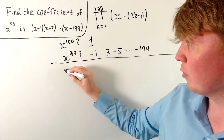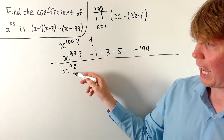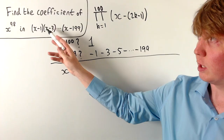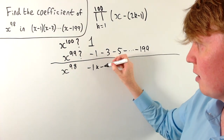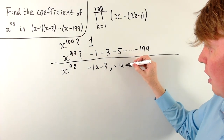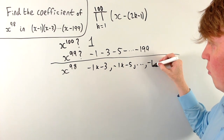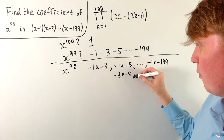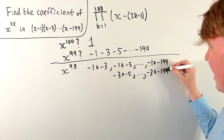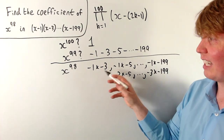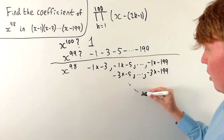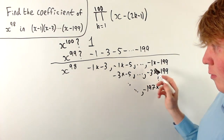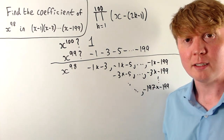To find the coefficient of x^98, we take two of the constant terms from the brackets. The first possibility is negative 1 times negative 3, then negative 1 times negative 5, and so on up to negative 1 times negative 199. Then all pairs involving negative 3: negative 3 times negative 5, up to negative 3 times negative 199. We continue until the last product, which is negative 197 times negative 199. We need to sum all of these to find the coefficient of x^98.